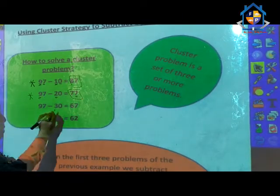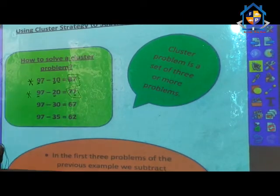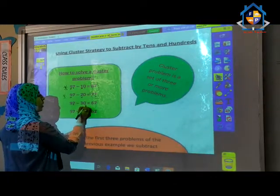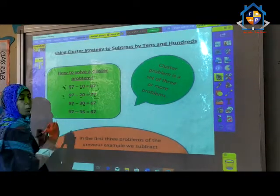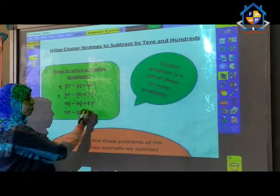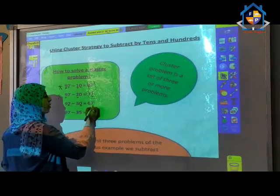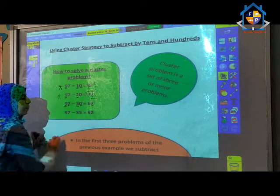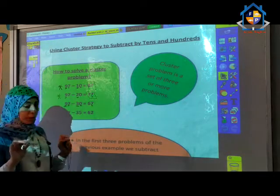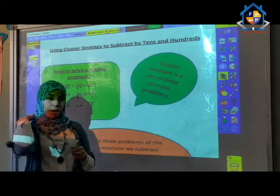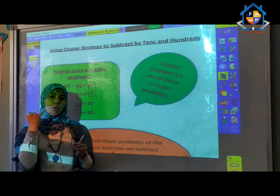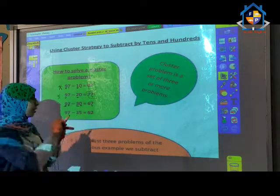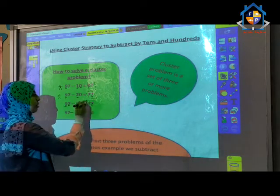The third problem: 97 minus 30. The ones digit stays as 7. And 9 minus 3: count from 3 to reach 9. After 3, 4, 5, 6, 7, 8, 9 — that is 6. So the answer is 67.